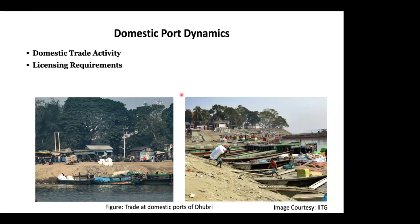We came to know that local traders are very keen to trade in international waters, but are unable to do so because of licensing requirements. Under India's Indian Vessel Act 1917, only certain kinds of vessels are allowed to operate in international ports. The small boats owned by local traders do not fall in that category, so they have been barred from international trade. Interestingly, although there is this formal restriction, informal trading between India and Bangladesh is already happening.